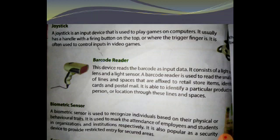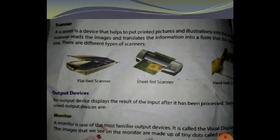Next is the scanner. A scanner is a device that helps to put printed pictures and illustrations into the computer. The scanner reads the image and translates the information into a form that the computer can use. There are different types of scanners: flatbed scanner, sheet-fed scanner, and handheld scanner.